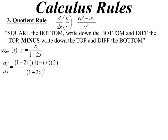Then we go to the top of the fraction, write down the bottom, 1 plus 2x. Diff the top, 1. Minus, and that's where you've got to be careful. This one's minus, not plus, minus write down the top. x, diff the bottom, 2. And that tidies all up to get 1 on 1 plus 2x all squared.